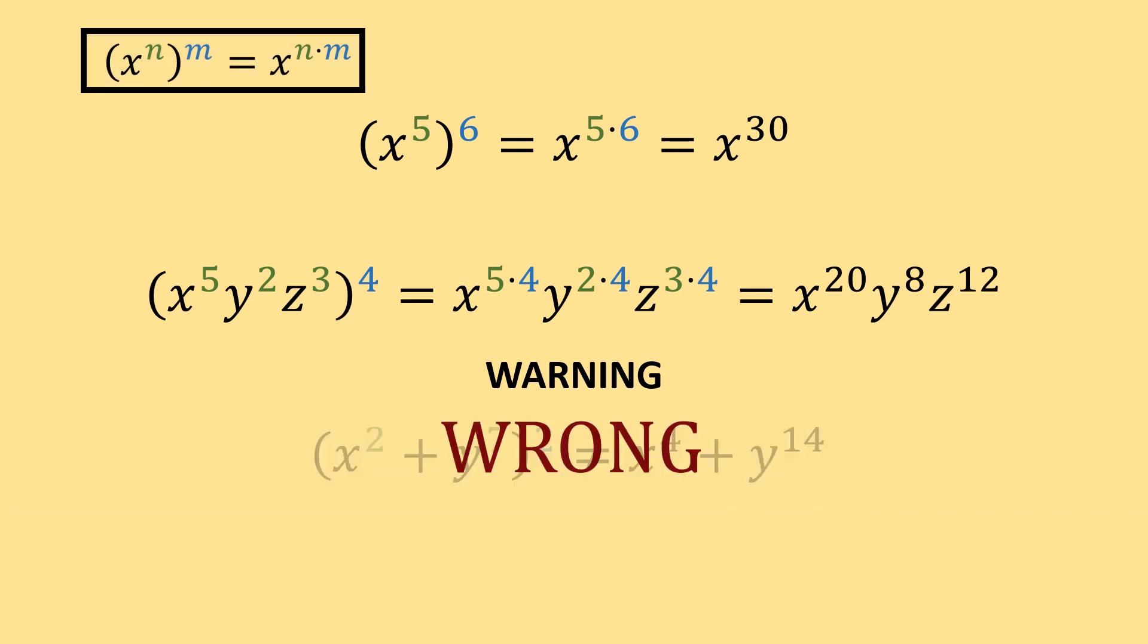That is because x squared plus y to the seventh, all of that squared, is equal to x squared plus y to the seventh multiplied by itself twice. We would have the binomial x squared plus y to the seventh multiplied together twice. And this should look kind of familiar.